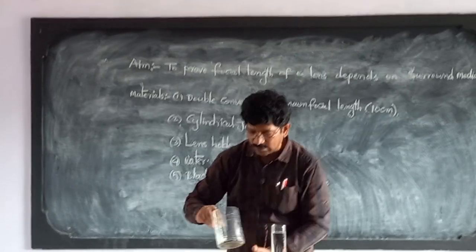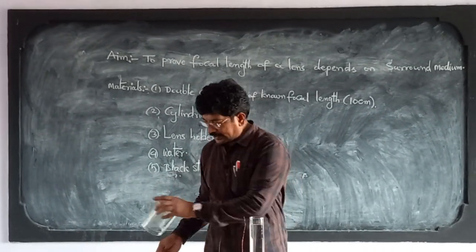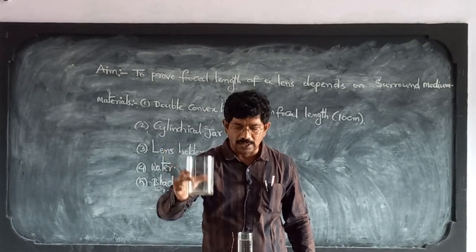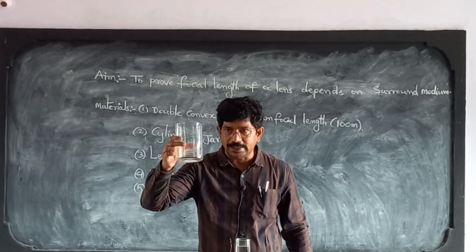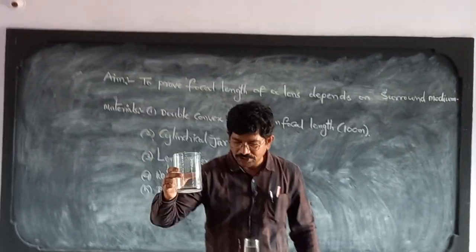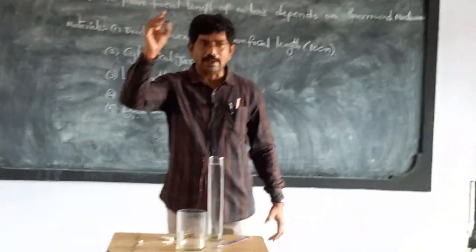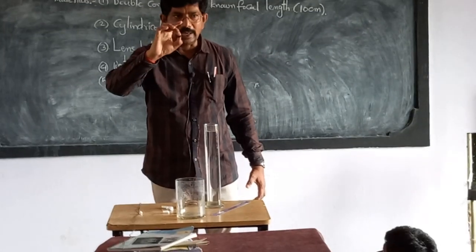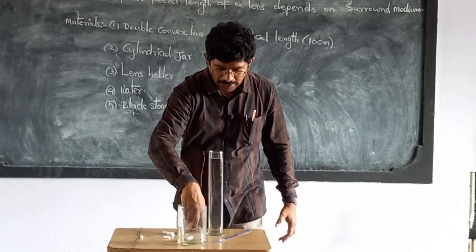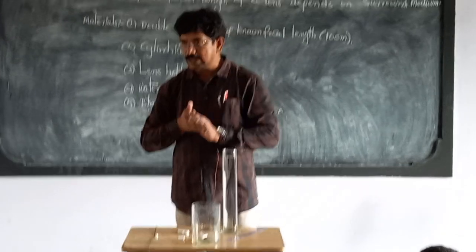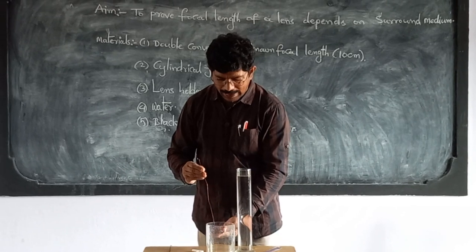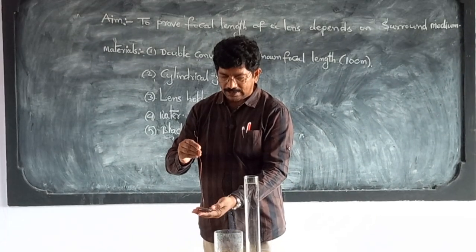Before starting the experiment, I have taken a cylindrical jar. I actually needed a one-meter length cylindrical jar, but it was not available, so I have taken a cylindrical jar of 40 centimeters. I kept the black stone inside the cylindrical jar, and then placed the lens in the circular lens holder.